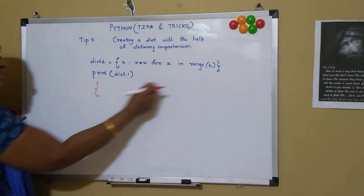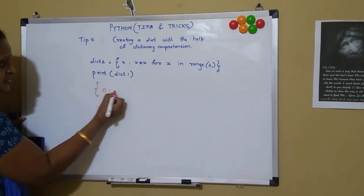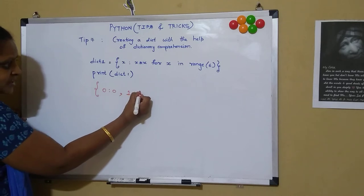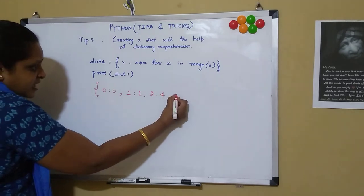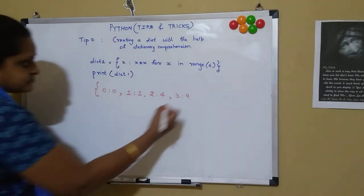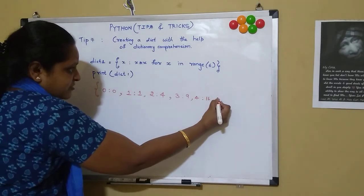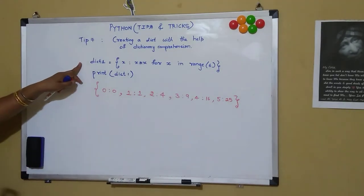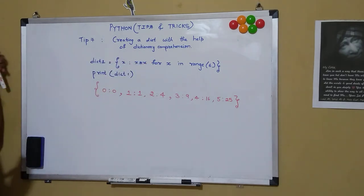When I print dict1, the output will be in dictionary format: x is 0 so 0 colon 0, x becomes 1 so 1 colon 1, x becomes 2 so 2 colon 4, x becomes 3 so 3 colon 9, x becomes 4 so 4 colon 16, then 5 colon 25. So it has created a dictionary with just a single line of code using dictionary comprehension.